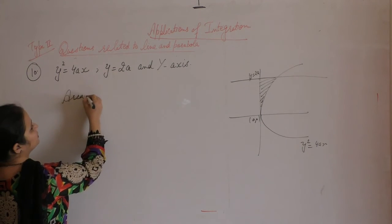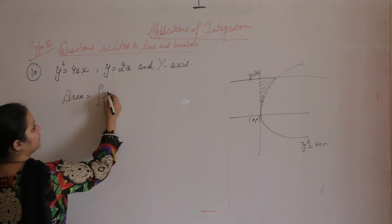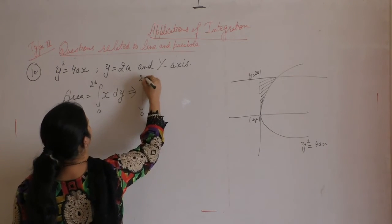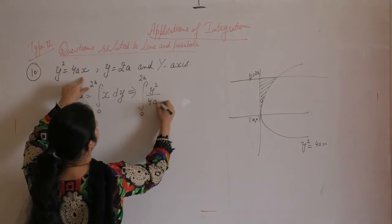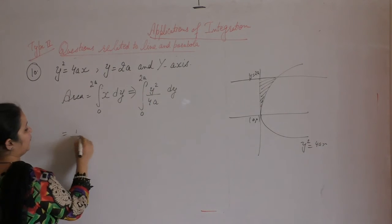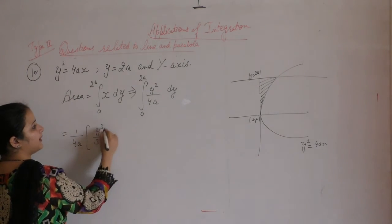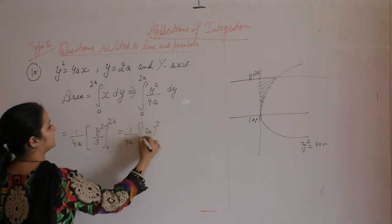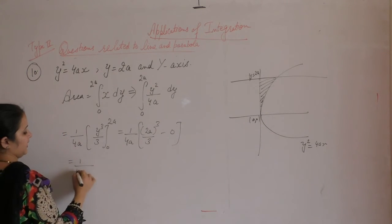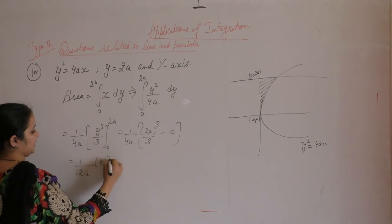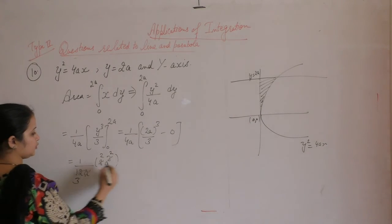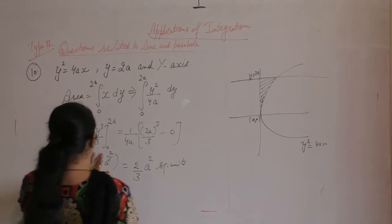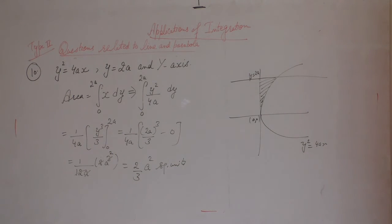Area = ∫x dy, limit from 0 to 2a. The value of x is y²/(4a), so the integral is (1/(4a)) ∫y² dy = (1/(4a)) × [y³/3] from 0 to 2a = (1/(4a)) × (8a³/3) = (1/(12a)) × 8a³ = 2a²/3 square units.